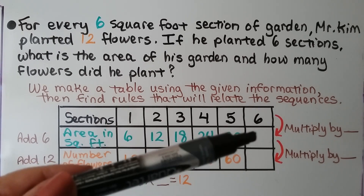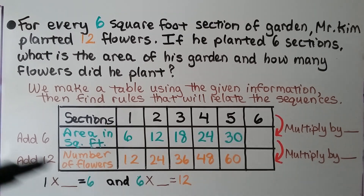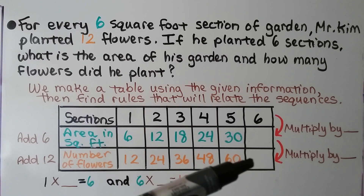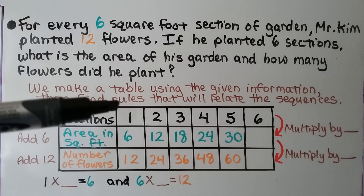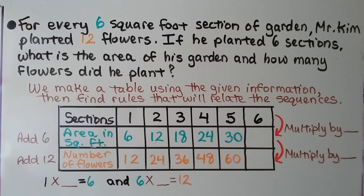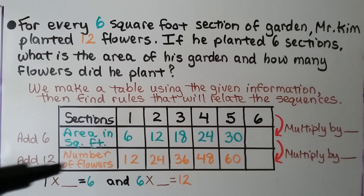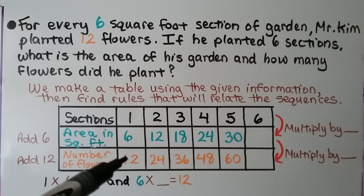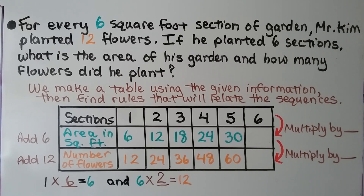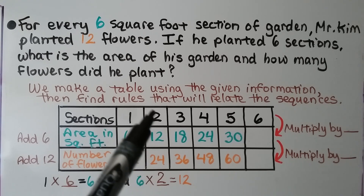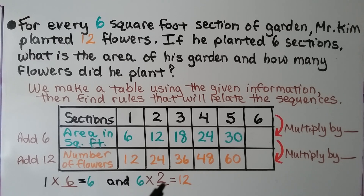We can fill in the unknown information in the table by either adding 6 for the square feet or adding 12 for the number of flowers. We can also look at the relationship between the sections, the area in square feet, and the number of flowers. 1 to 6 is 1 times 6. And 6 times 2 equals 12, so we multiply by 2. We check for two sections: 2 times 6 is 12 — yes, times 6 works. And 12 times 2 is 24 — yes. So this is multiplied by 6, and this is multiplied by 2.